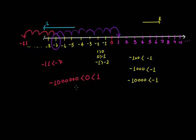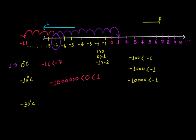Don't get confused - you know that the more your number becomes negative, the smaller it becomes. You might be thinking: what about temperature? If on day one the temperature was zero degrees Celsius, on day two it dipped to minus ten degrees Celsius, and on day three it is minus thirty degrees Celsius - how do we interpret this? It tells us that on day one the temperature was zero, on day two it dipped down to minus ten, and on day three to minus thirty degrees Celsius.